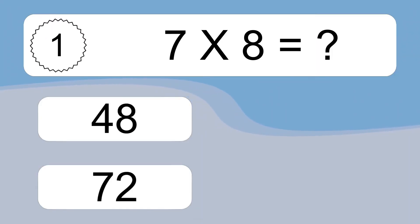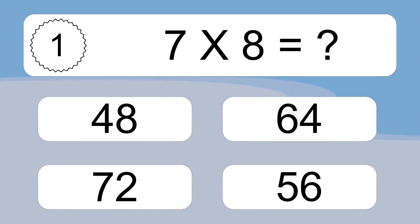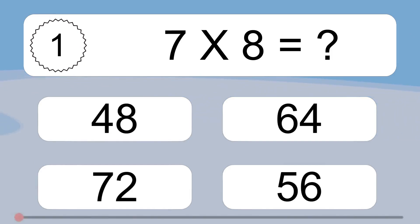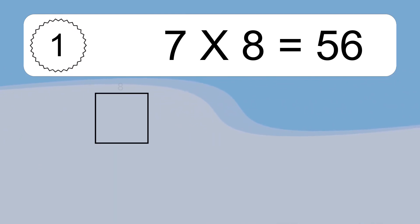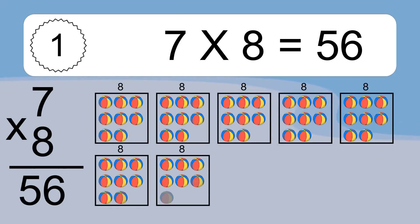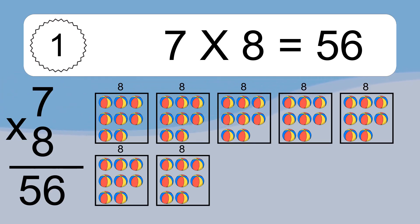7 times 8 equals what? 7 times 8 equals 56. We have 7 boxes, and each box has 8 colorful balls inside. If you count all the balls in all the boxes together, you will have 7 times 8 balls. This equals 56 balls.